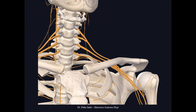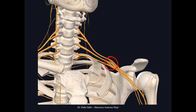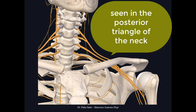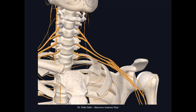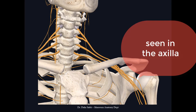The different parts of the brachial plexus can be found in three regions. The supraclavicular part lies above the clavicle, the retroclavicular part lies behind the clavicle, and the infraclavicular part lies below the clavicle. The supraclavicular part includes the roots and trunks, the retroclavicular part includes the divisions, and the infraclavicular part includes the cords and branches of the brachial plexus.